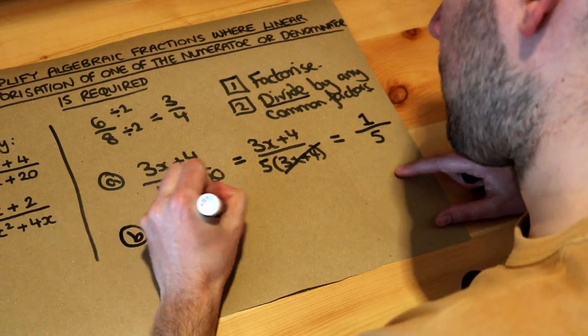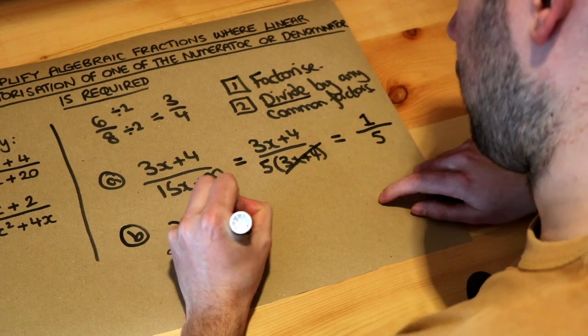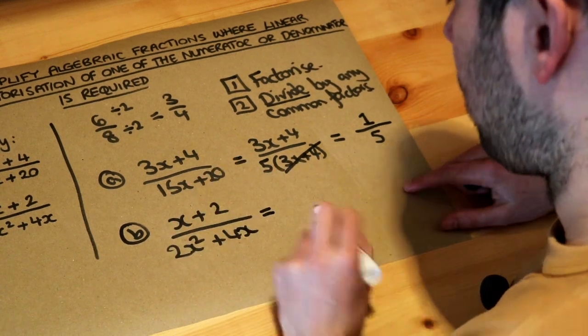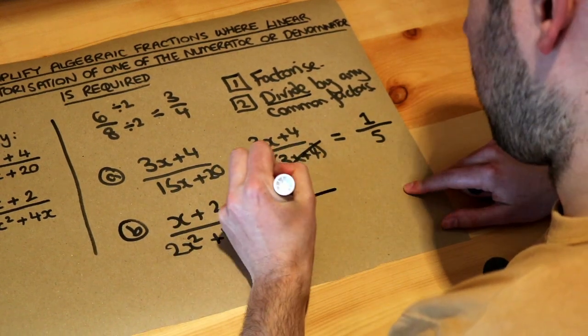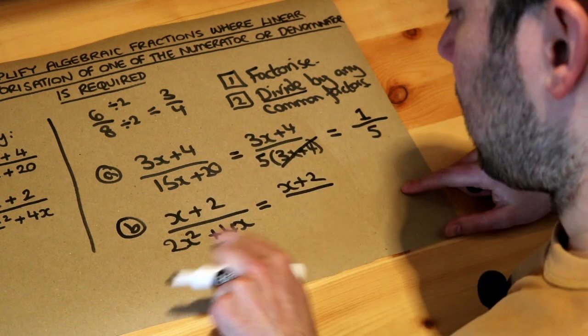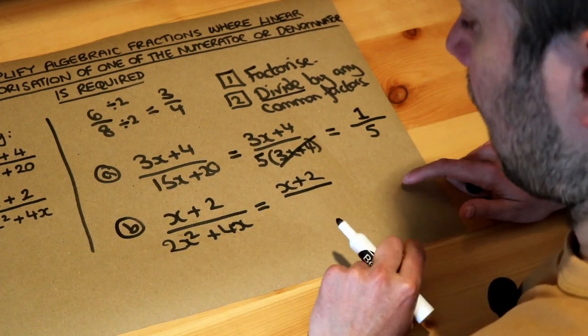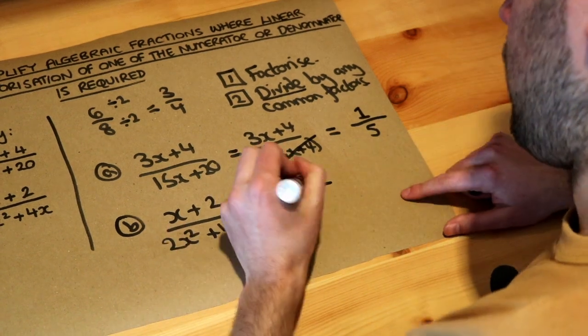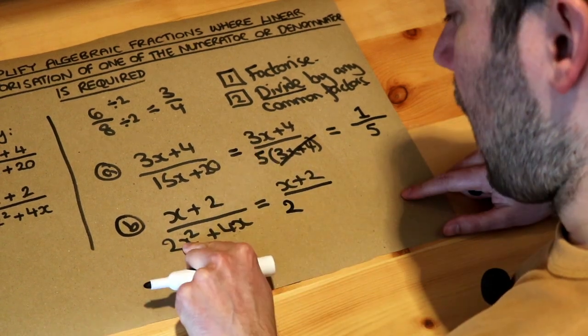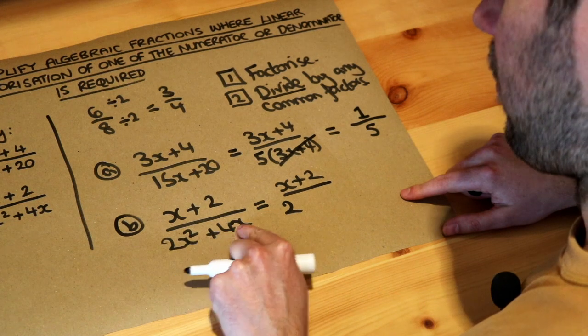What about the second one? Again, we do step 1, which is to factorize the numerator and denominator. So x plus 2, that doesn't really factorize. You can't take anything out there. But 2x squared and 4x, what do they have in common? Well, 2 and 4 have a common factor of 2. But x squared and x have a common factor of x.